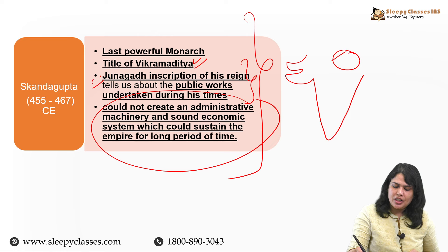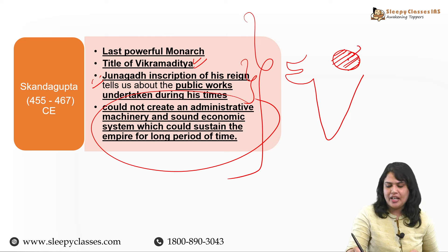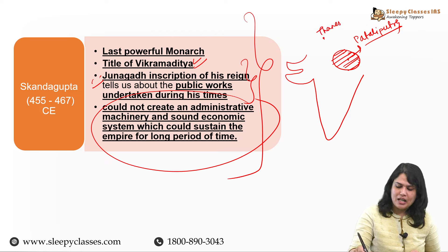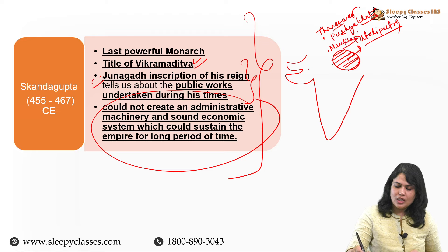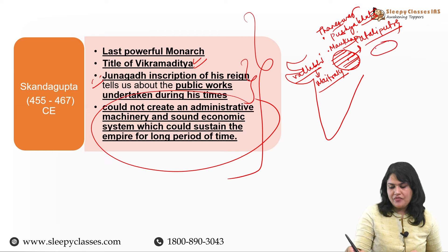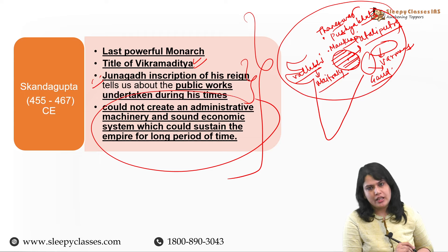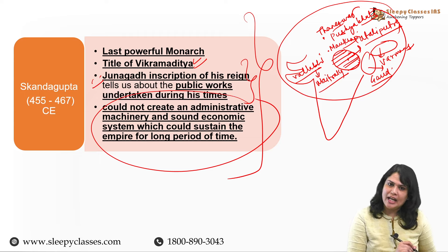Junagadh inscription mein yeh mention karte hain ki inhon ne kis tarike se Sudarsana lake jo hai, use repair karwaya - jise pahle Rudradaman First ne bhi repair karwaya tha - Shaka ruler ne. But hum yahan dekhte hain he could not create an administrative machinery and sound economic system which could sustain the empire for a long period of time. Aur iske baad mein hum dekhte hain Guptas ka jo decline hai, woh shuru ho jaayega. 550 CE ke around Guptas jo hain, woh kewal aapke eastern UP aur Magadha wale area mein confined rah gaye the, aur inki capital thi Pataliputra - aur inko late Guptas kehte hain. Haryana mein Thaneshwar ke paas Pushyabhuti dynasty jo hain, woh emerge ho rahi thi. Hum yahan dekhenge Kannauj mein Maukharis; Gujarat ke Vallabhi mein Maitraka dynasty; Assam valley ke andar Varmans; Bengal wale area mein Gauda - yahi regional powers hain jo emerge ho rahe the on the ruins of the Gupta empire.